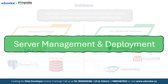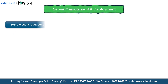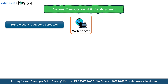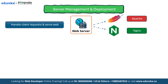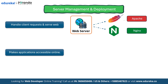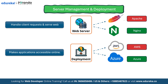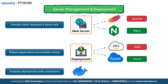With databases covered, the next key step is server management and deployment. Web servers handle incoming user requests and deliver the right content to the user's browser, ensuring your website is scalable and responsive. Popular web servers like Apache and Nginx are known for their reliability and performance. Deployment refers to making your web application accessible online by setting up your application on servers or cloud platforms. AWS and Azure are widely used for their scalability, security and reliable hosting. Finally, containers package your application with everything it needs to run consistently across different environments. Docker makes deployment easier, ensures consistency and simplifies scalability.